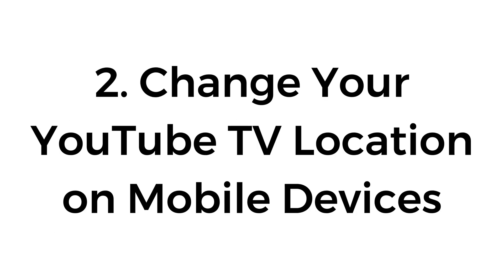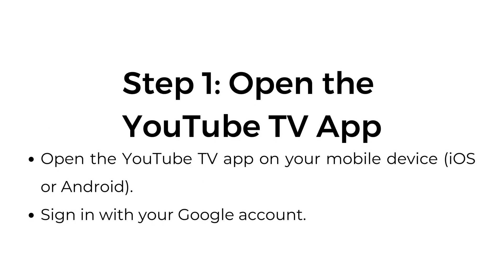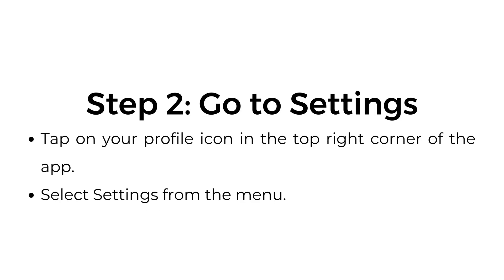Number two: change your YouTube TV location on mobile devices. Step one, open the YouTube TV app on your mobile device and sign in with your Google account. Step two, go to settings. Tap on your profile icon in the top right corner of the app and select Settings from the menu.